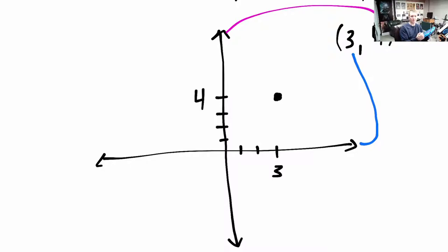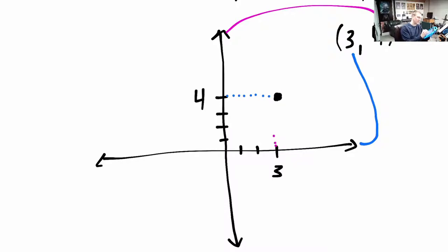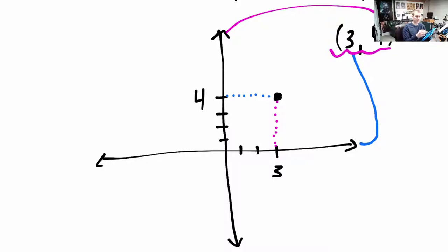This little dot I've drawn is exactly three units over — it's right over three — and it is exactly four units up. If I drew a horizontal line, it's right there at the fourth. This is the way we usually think of ordered pairs. If we look at this ordered pair, the first number describes how far left and right it is. The second number describes how high up or down it is.